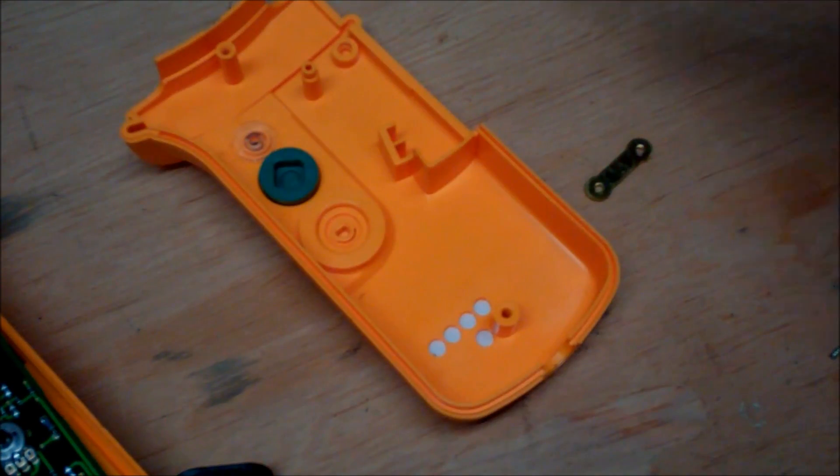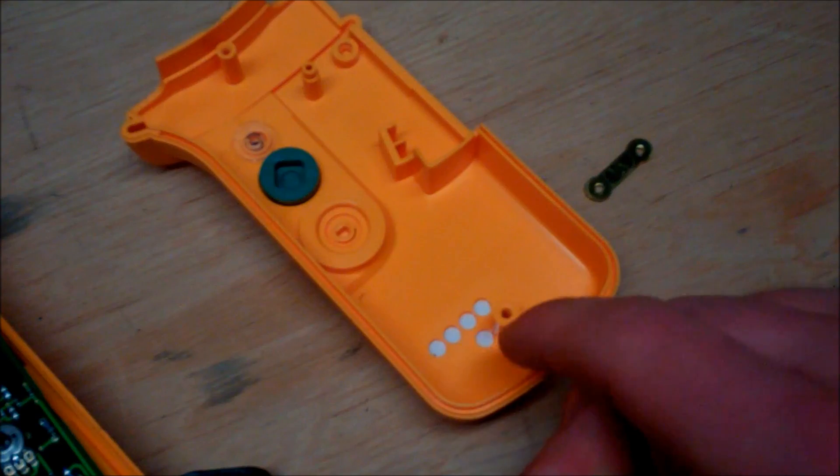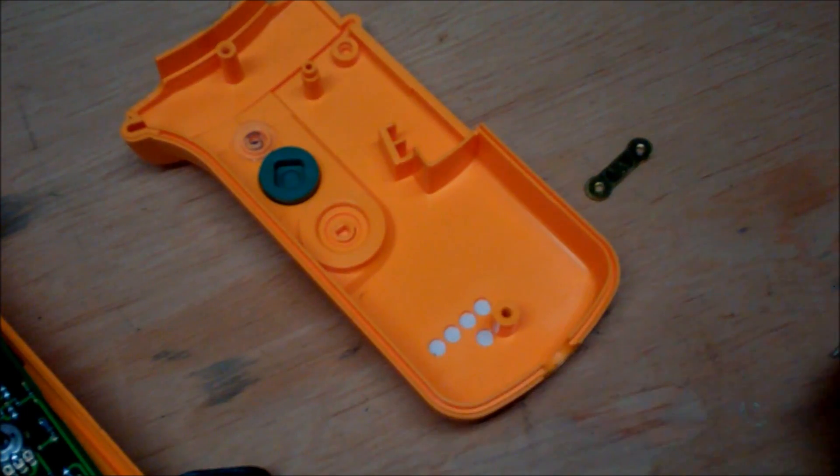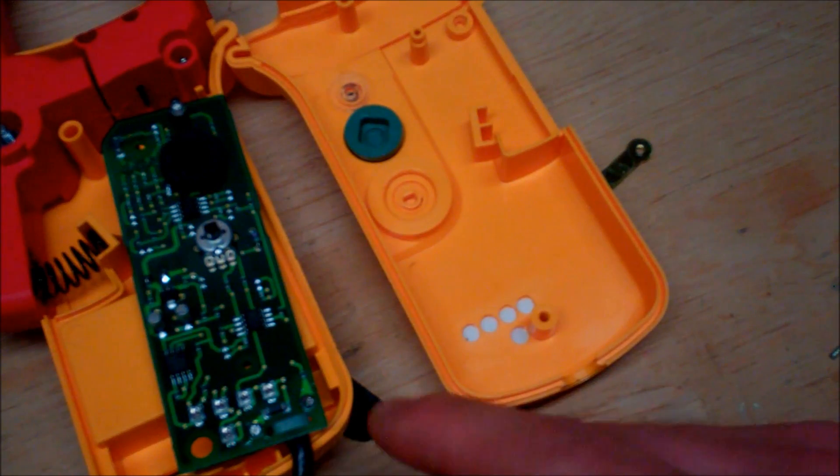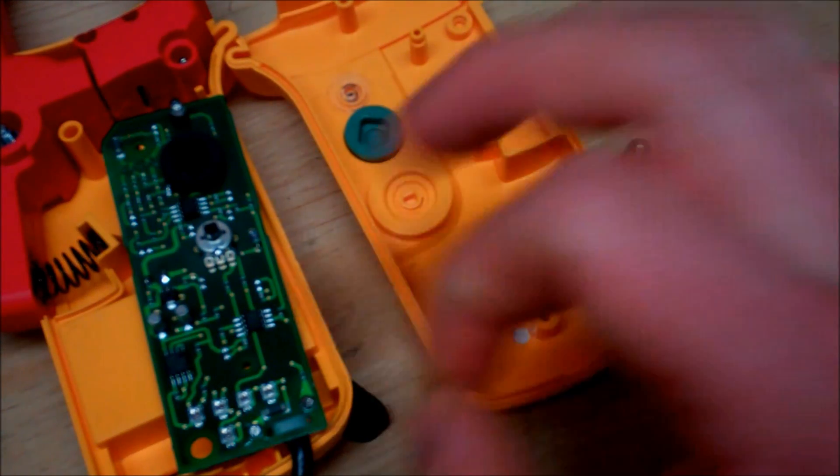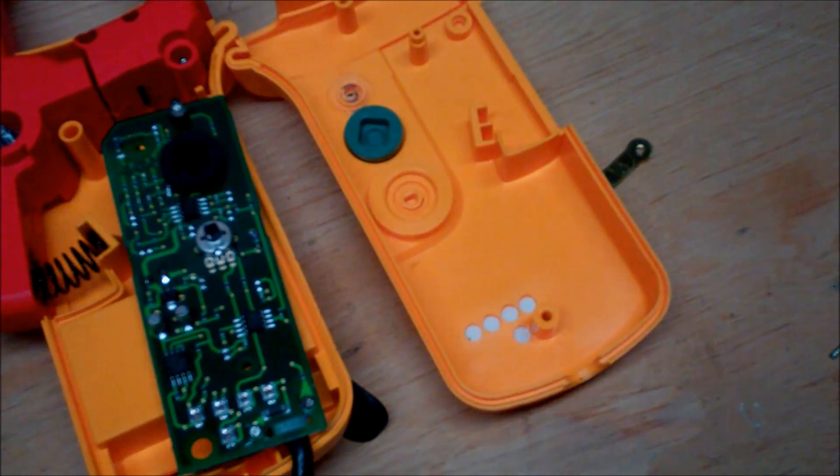And the one thing that did stand out was the five holes right here. What I figured is that that's in association with this part of the board where you have exposed potentiometer. So when you send this out for calibration, if they have any adjustments for the hall effect or anything like that, that's where they're going to make it.